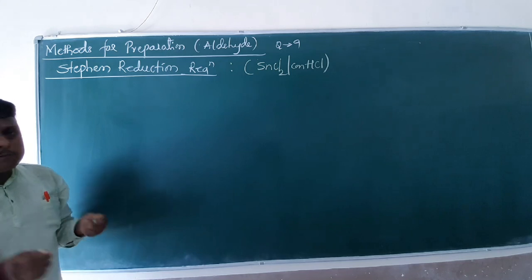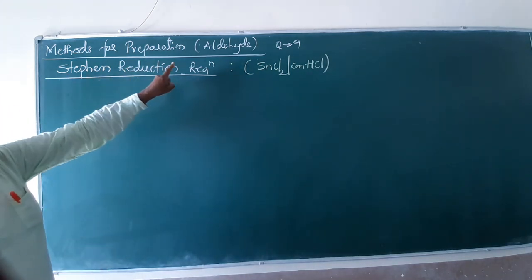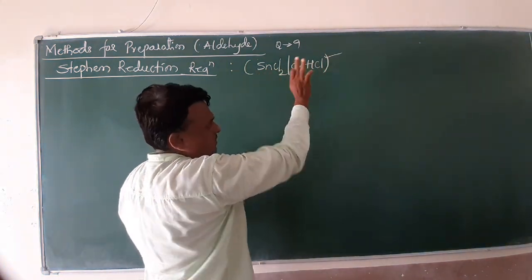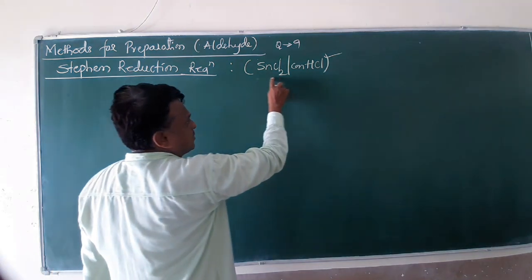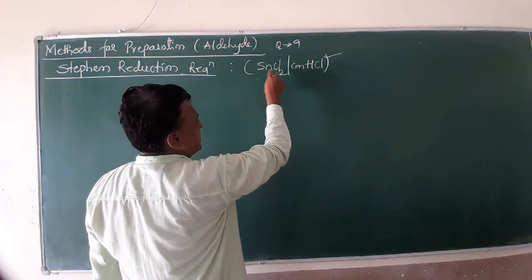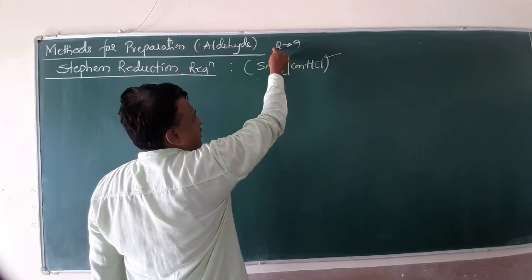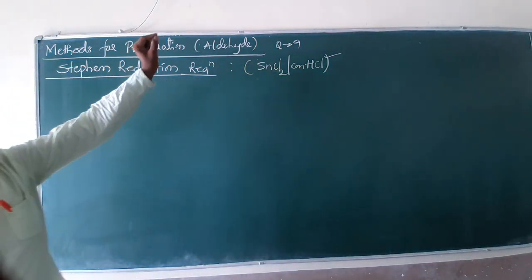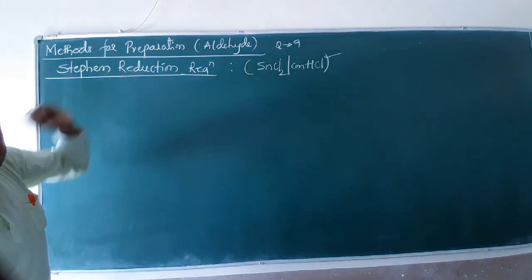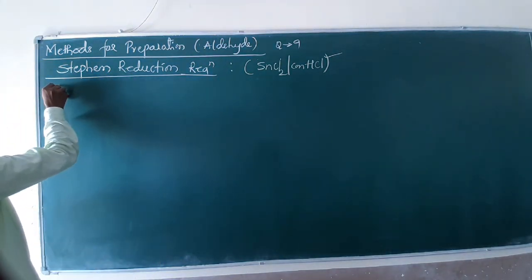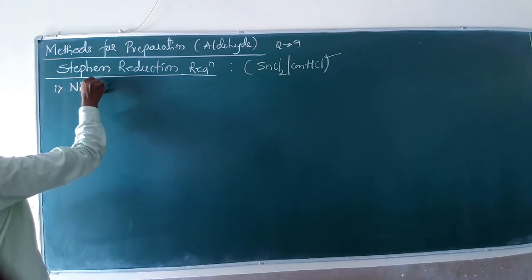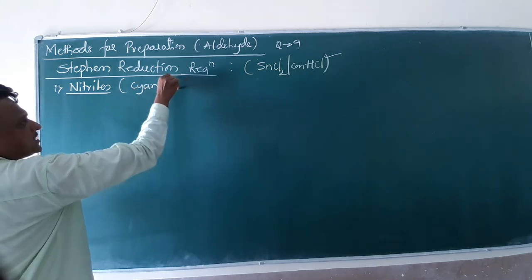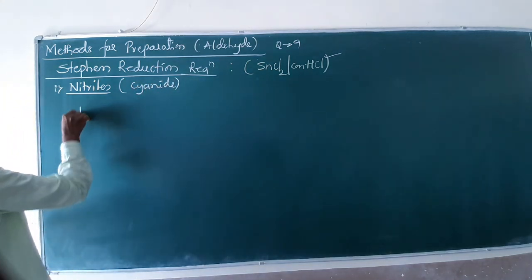Let us begin with the first important reaction of our syllabus, Stephens reduction reaction. In this reaction we use the reagent tin chloride with concentrated HCl. Keep in your mind tin chloride with concentrated HCl or stannous chloride with concentrated HCl, because it is one more question for question number 9. How to form aldehyde? This by using nitriles. Nitriles are nothing but cyanides.